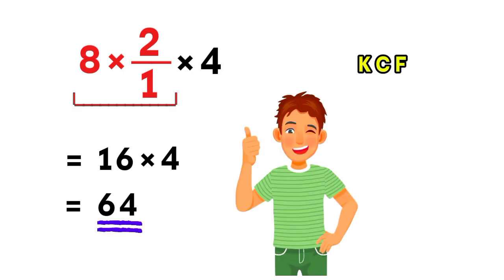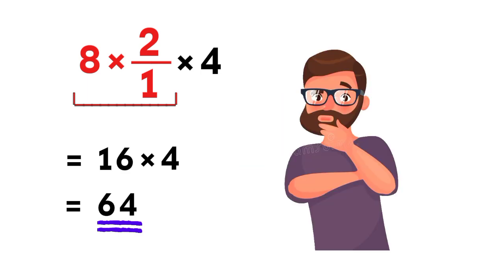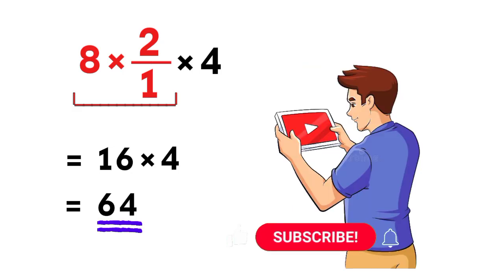And that's our final answer. The correct answer to this problem is 64. So remember, always go left to right when multiplication and division appear together. If you reverse the order, you'll end up with the wrong answer.